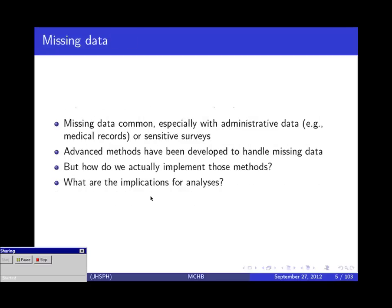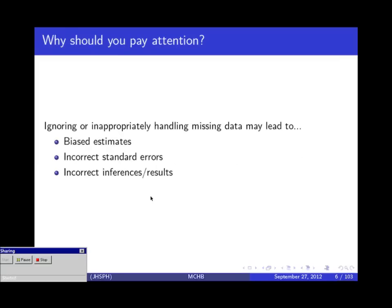The reason you're probably on the call is that you know missing data is common, especially if you have administrative data or sensitive surveys. There are advanced methods to handle missing data, but what we're really going to talk about today is how to implement these methods and what the implications are for analyses if you do or don't use them. The short answer is you can get the wrong answers if you don't handle missing data correctly — you can get bias in your effect estimates, or even if they're not biased, you might have incorrect standard errors, usually ones that are too small.